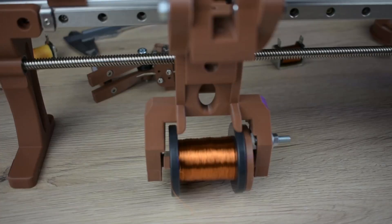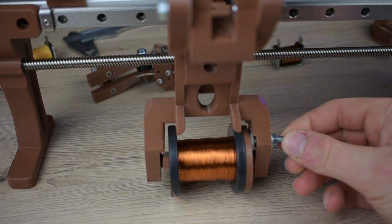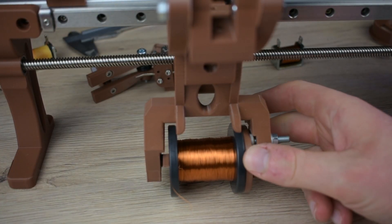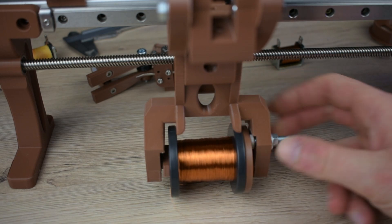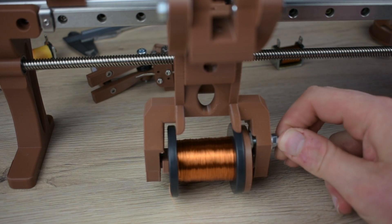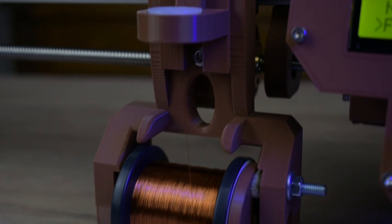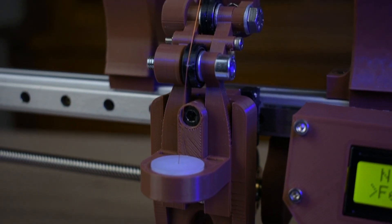Also, the tensioning mechanism is pretty simple and at the wrong location at the moment. It really needs to be a dedicated system between the spool and the point where the wire leaves the spooling arm. Apart from those two points, the machine works quite nice and reliable.